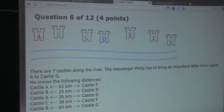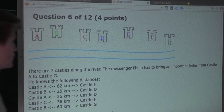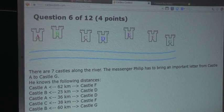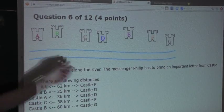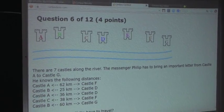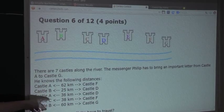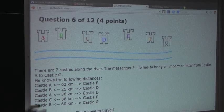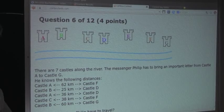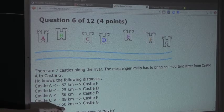Alright, so we need to use a statement with A and we need to use a statement with G in it, because we want to know how far it is from A to G. Now, looking at these five statements, we can see two of them have Castle A involved, and we know that only one statement has Castle G involved, which is this one down here. So we will start with that statement.